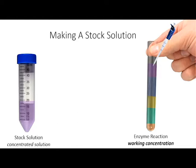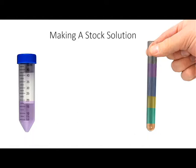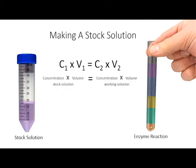Now to figure out how to make all this happen in a tidy fashion, we're going to use the old trusty formula from GenChem, C1 times V1 equals C2 times V2. That is, the concentration times the volume of a stock solution is equal to a specified concentration and volume of your working solution, or the enzyme-reaction mixture.